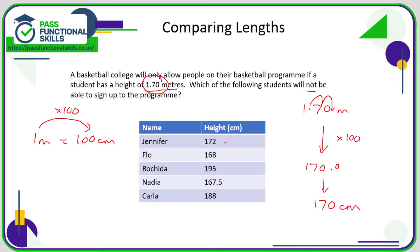So who is shorter than 170 centimeters? Jennifer is 172, which is above, so she's okay. Flo is under. Rashida is over. Nadia is also under. And Carla is over. So the two students that will not be able to sign up to the program are therefore Flo and Nadia.